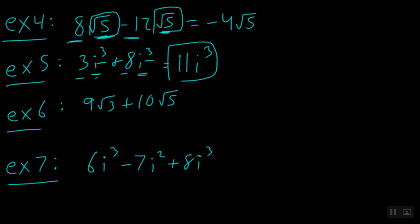Let's go on to example number 6. Here we have 9 square roots of 3 plus 10 square roots of 5, and you'll notice that the inside of the square root is a different number. Here, this is another example where we cannot combine, so this would really just be 9 square roots of 3 plus 10 square roots of 5. It cannot be simplified.